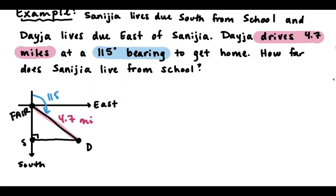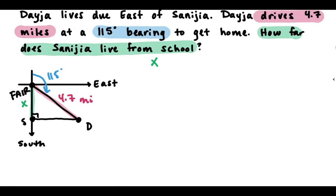How far does Samajah live from school? That's what we're looking for — it's a side, so we'll give it the variable x. On our diagram, that's the straight up-and-down segment from school to Samajah. The only issue is that our bearing is outside the triangle, and we need an angle inside the triangle.